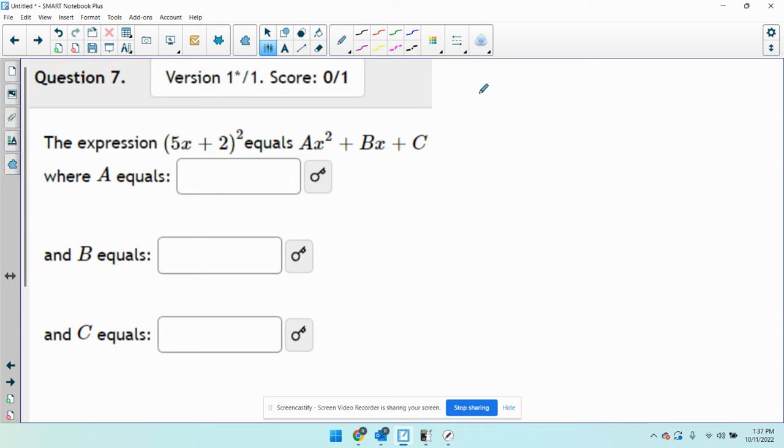So I'm going to start by squaring this thing. I'll just do that by writing it twice. 5x plus 2 times 5x plus 2. I'm going to FOIL this thing. I'm going to multiply each term in the first parenthesis by each term in the second parenthesis. So I'm going to multiply the first term in this parenthesis by the first term in that one. 5x times 5x gives me 25x squared. I'm going to multiply this term by this term. 5x times 2 is 10x. Now I'm going to multiply the 2 by each term. 2 by 5x is 10x. 2 times 2 is 4.